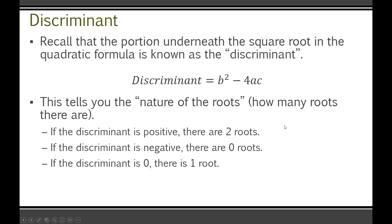First things first — the discriminant. I want you to recall that the portion underneath the square root in the quadratic formula is known as the discriminant. The discriminant is equal to b² minus 4ac. The whole point of it is it tells you the nature of the roots — which is just a fancy way of saying how many roots there are. If you have a positive discriminant, you're going to have two roots, meaning two different x-intercepts. If you have a negative discriminant, you're going to have no roots.